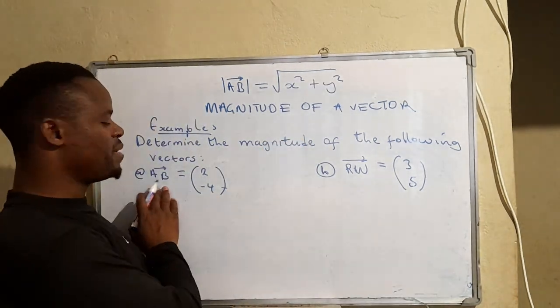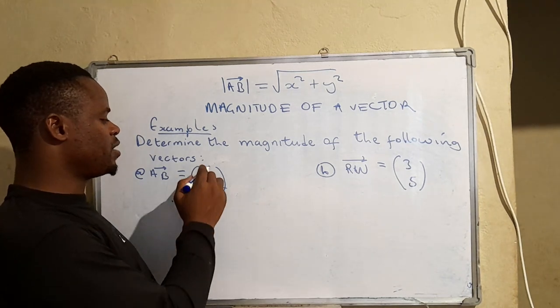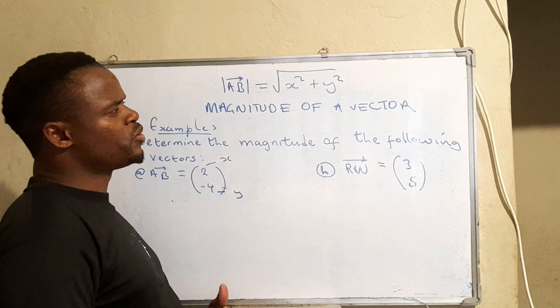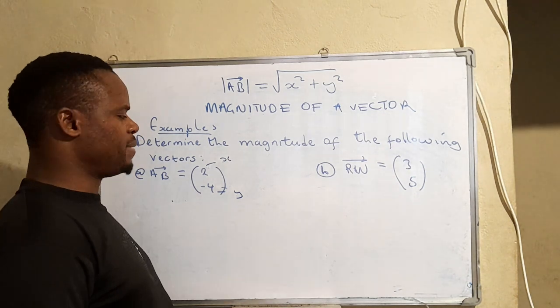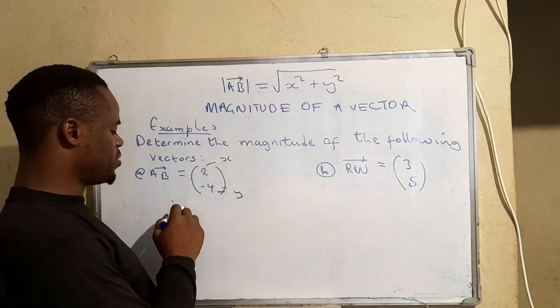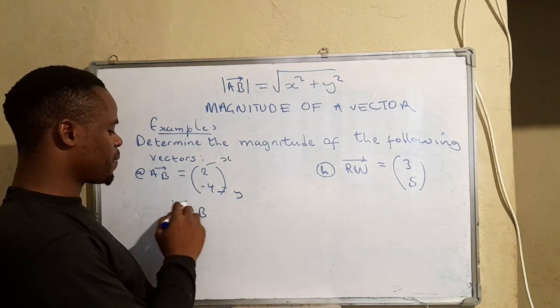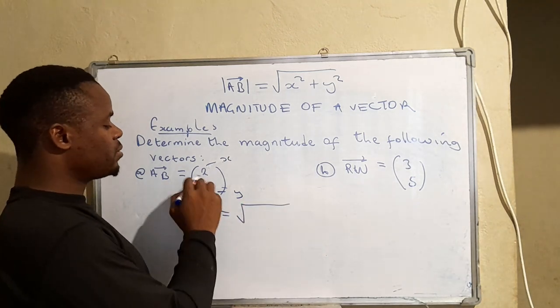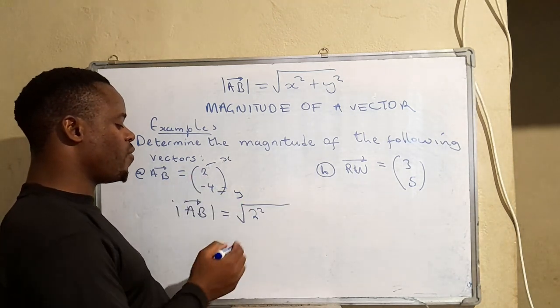We have AB equals (2, -4). This one is the x value and that one is the y value, so you should be able to actually label them like that. So then how do we determine the magnitude of this vector? |AB| equals the square root of the square of the x component plus the square of the y component.